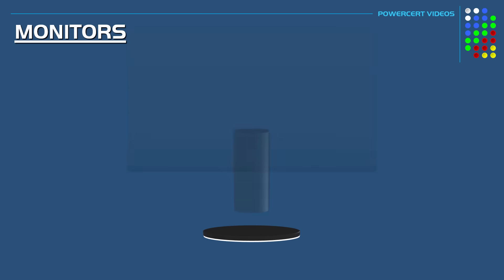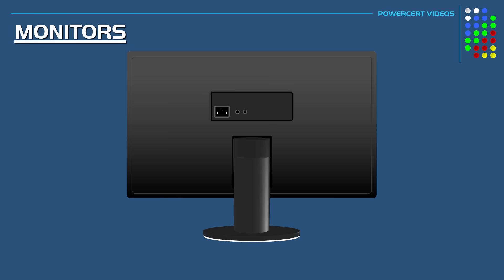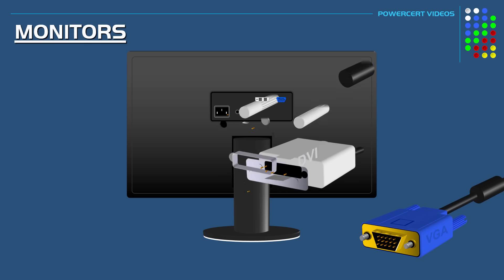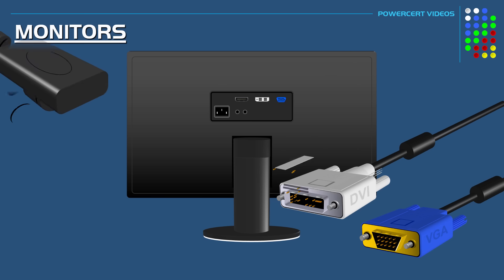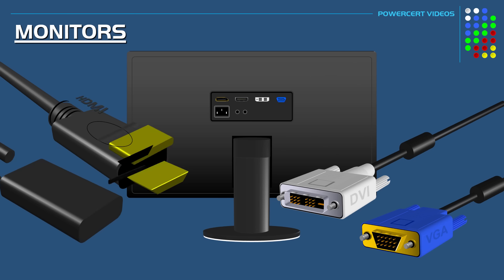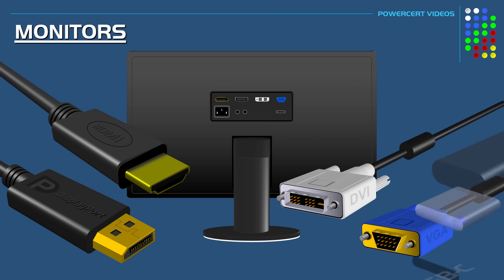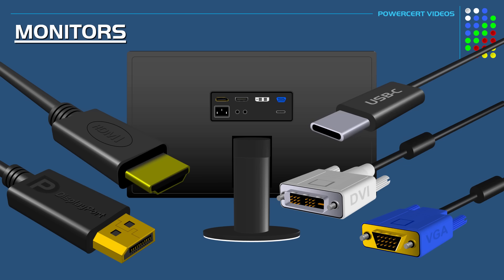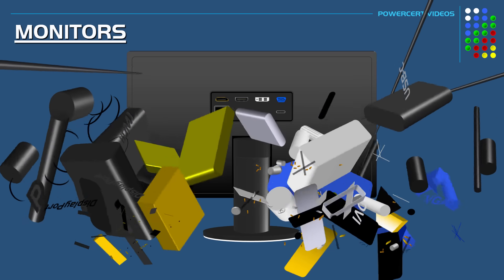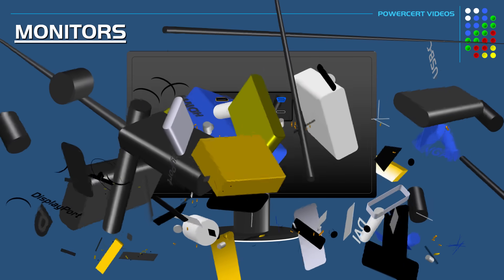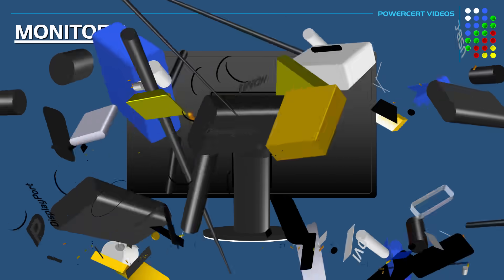A computer monitor may have one or several video ports that monitor cables plug into, and those ports and cables could be VGA, DVI, HDMI, or DisplayPort. Some modern monitors may also include USB-C and Thunderbolt ports. So if you're in the market for a new monitor, you need to make sure you get one with the correct video port to match your video card, otherwise you'll end up using adapters or exchanging the monitor.